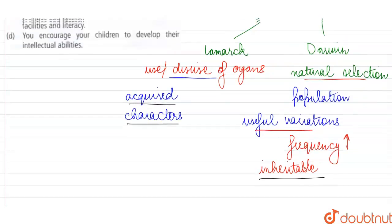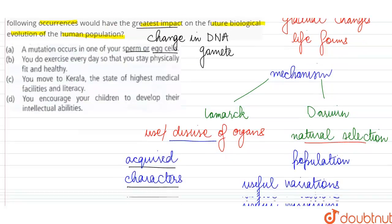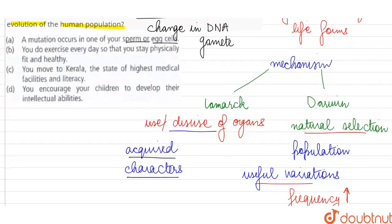So if we look at the options, first they are saying if a mutation occurs in one of the sperm or egg cells, this is going to have a great impact on the process of evolution because mutation means a change at genetic level or a change in the DNA. And if such a change is occurring in the gamete - that is the sperm or the egg - then it is these gametes that are going to fuse during fertilization to form the embryo or offspring. So these genetic changes are also going to be passed on to the progeny, that is to the next generation. So this is going to have an effect on the evolutionary process.